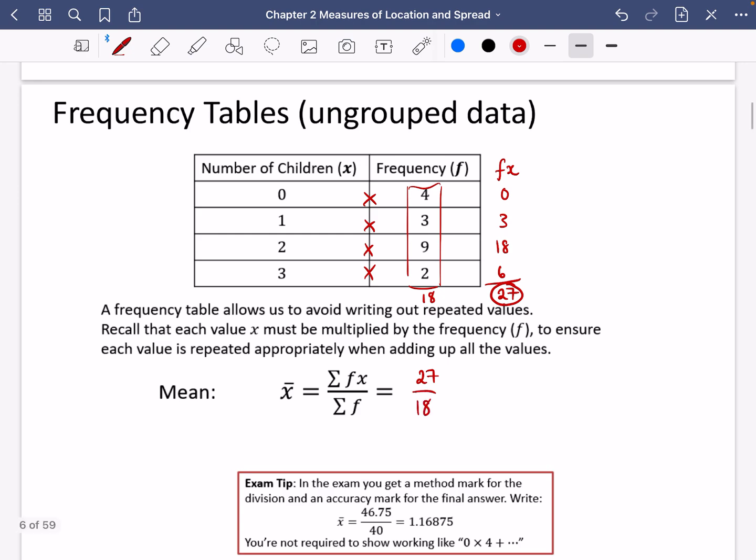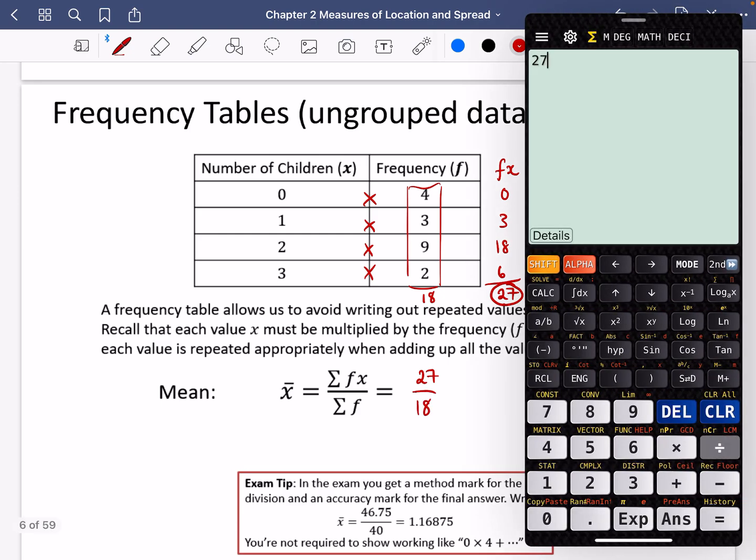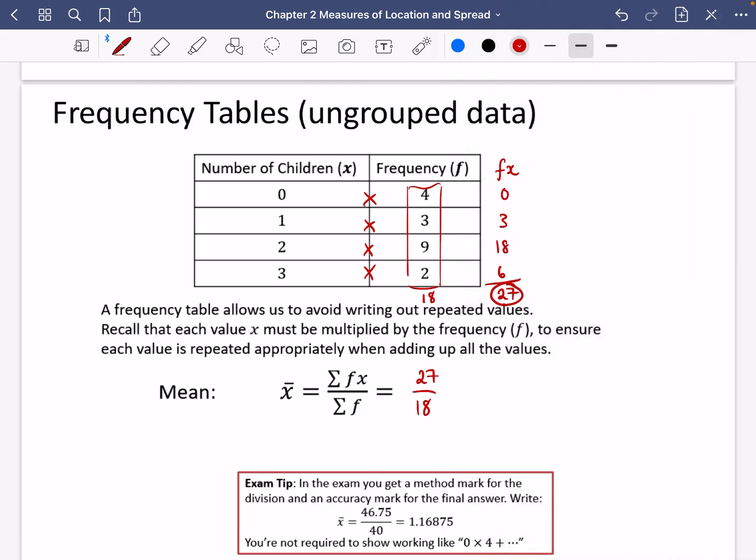So it's just going to be 27 over 18. And 27 over 18 is just 1.5. So this is saying that the mean number of children in a family is 1.5 children.